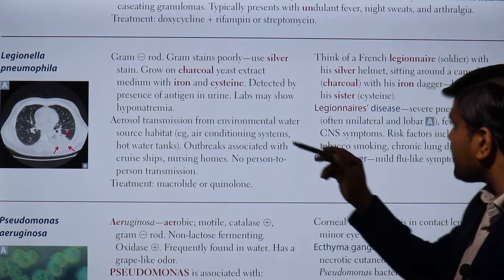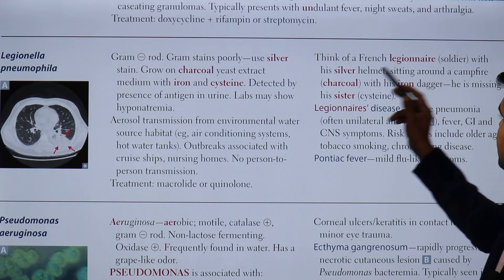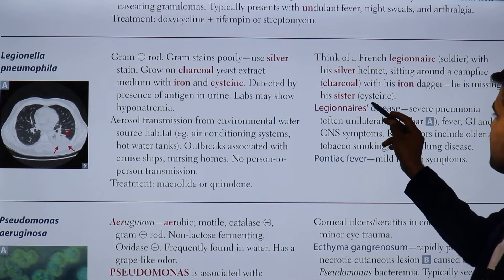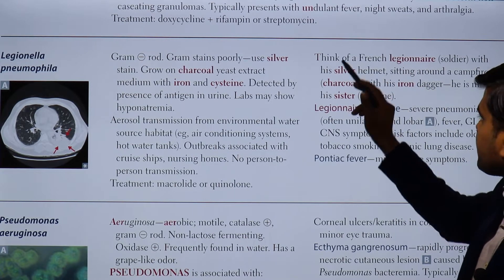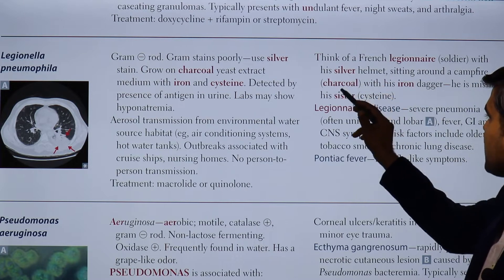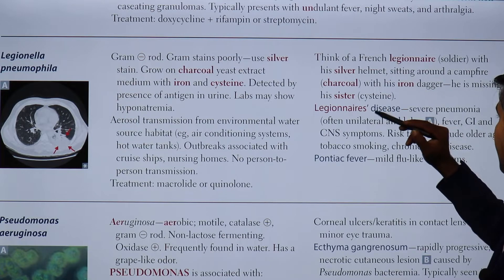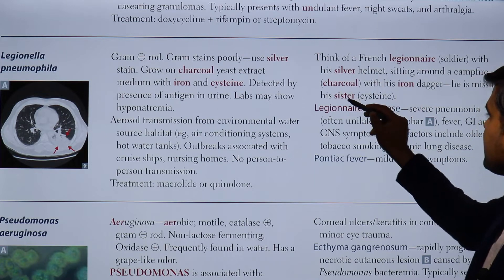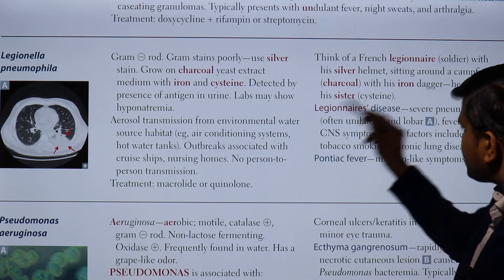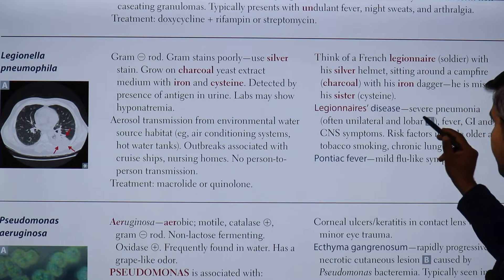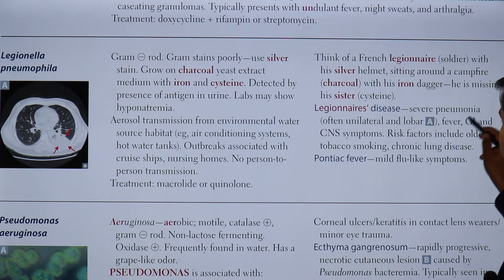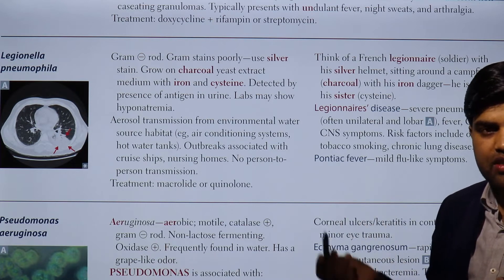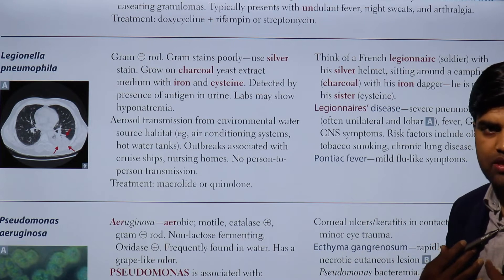To remember this organism, think of a French Legionnaire soldier with a silver helmet sitting around a campfire of charcoal with an iron dagger, missing his sister (cysteine). Legionnaire's disease causes severe pneumonia, often unilateral and lobar, along with fever, GI symptoms, and CNS symptoms. The silver stain is used; growth requires charcoal yeast extract medium enriched with iron and cysteine.